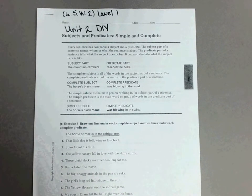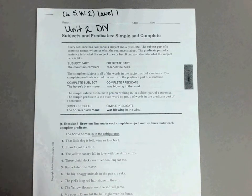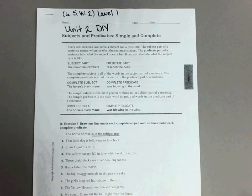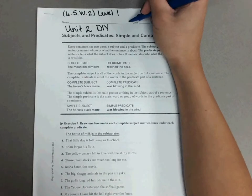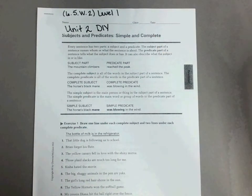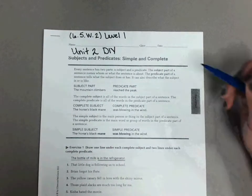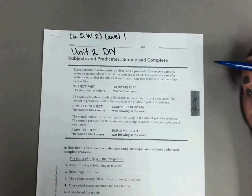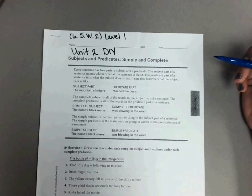This is Level 1 DIY for Unit 2, Standard 6.5.W.2, and we're going to be talking about subjects and predicates — simple and complete. First, what you need to do is make sure you put your name on your paper. Let's look at this first part right here that gives us a little information about what we're going to be doing.